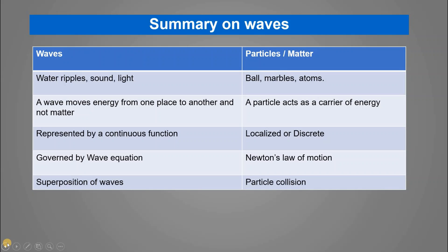Now we will classify waves and particles in the conventional sense. Waves include sound waves, light waves, and ripples in water — these are classical waves. If we have a ball or a small atom, this is a particle.